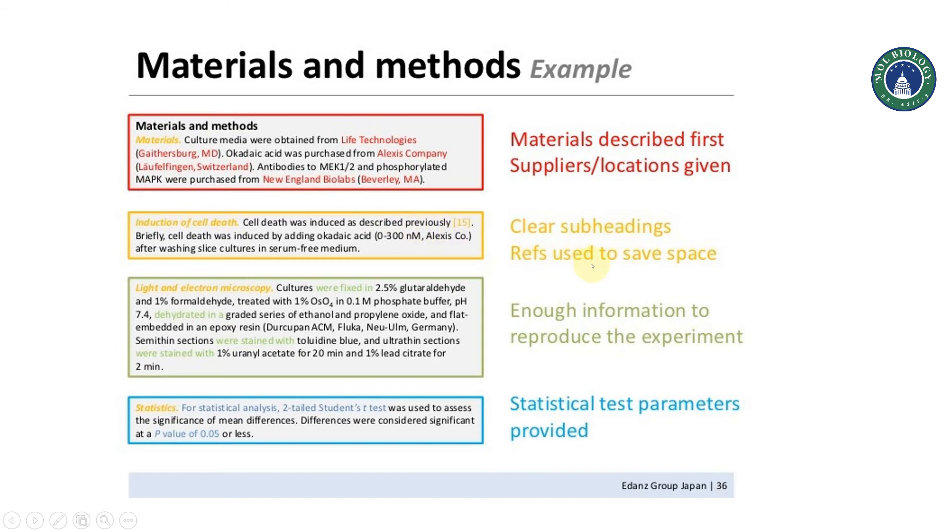You can mention like clear subheading reference and even sometime you can use the reference like cell death was induced as described previously. This is called citation. Here you can cite the previous article if you are exactly using the same way as it was reported previously. But if you have modified something, you can use here that it was used with little modification and you can mention here all the modifications. Like here you used light and electron microscopy, you can mention like step one, step two, step three each and like here you used epoxy resin - from where you did buy.